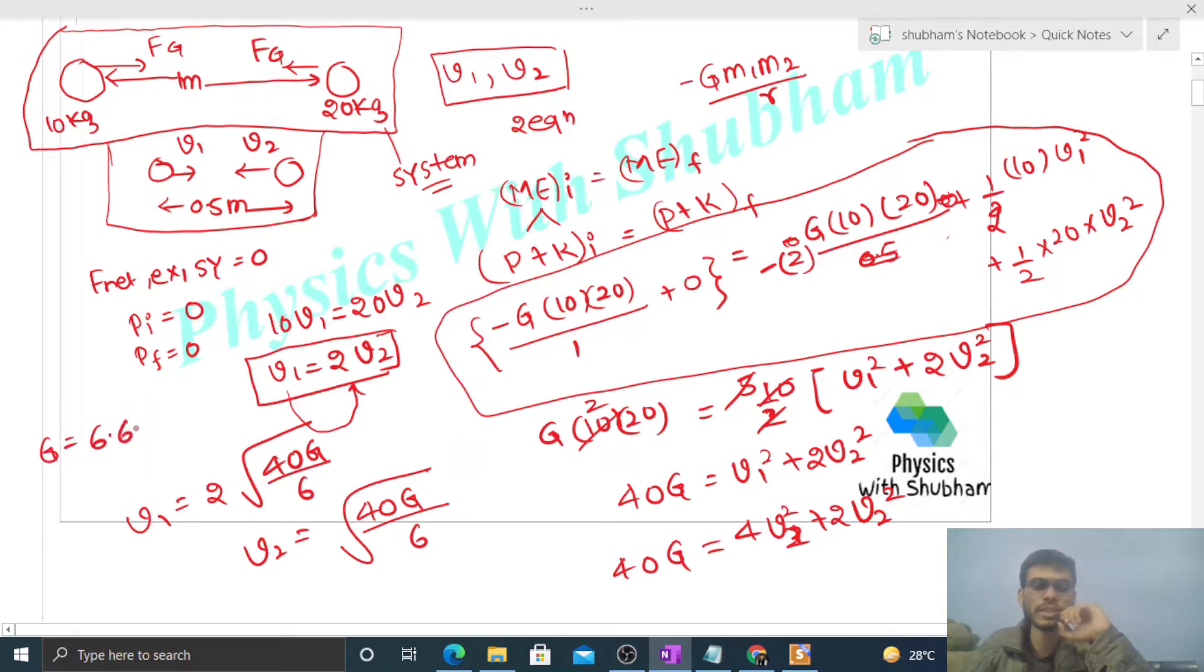G is 6.67 times 10 raised to the power minus 11. Now you can put this value and calculate the numerical answers for V1 and V2.